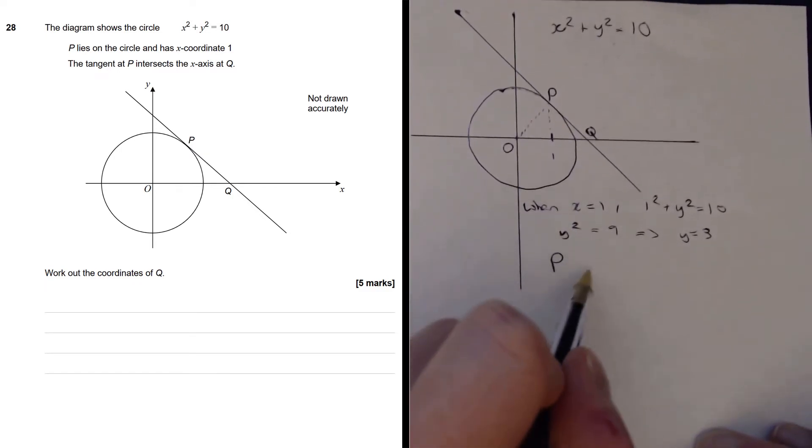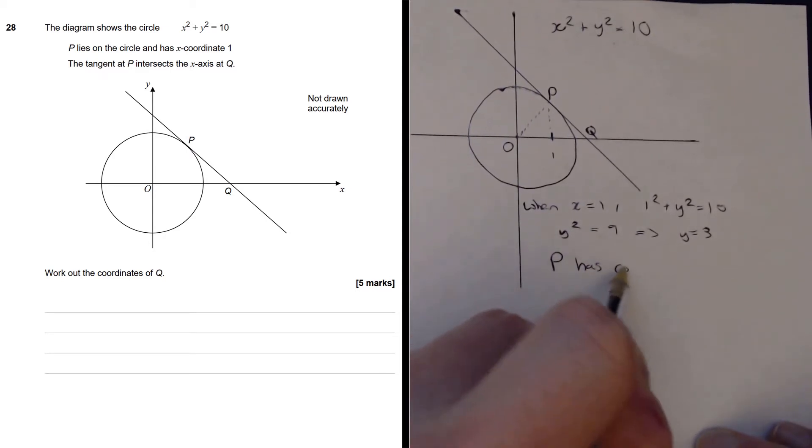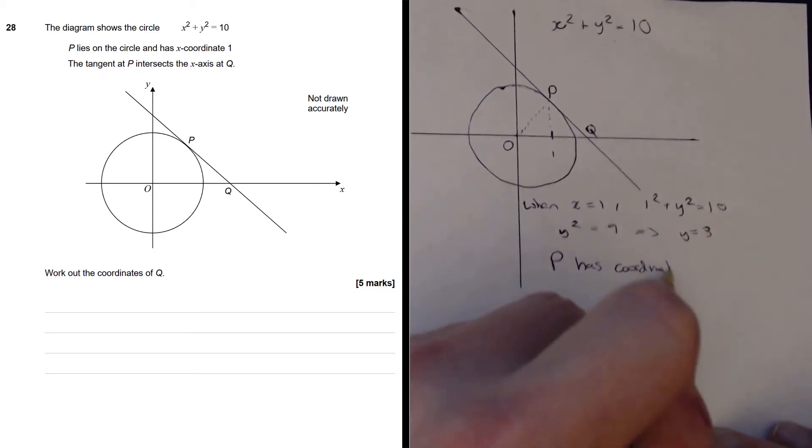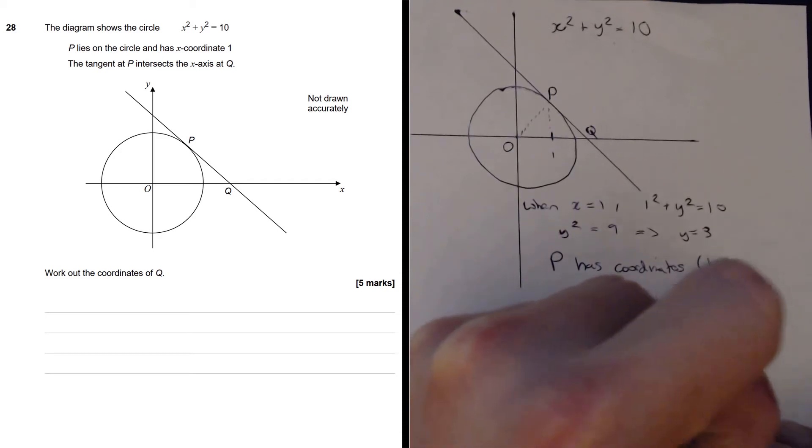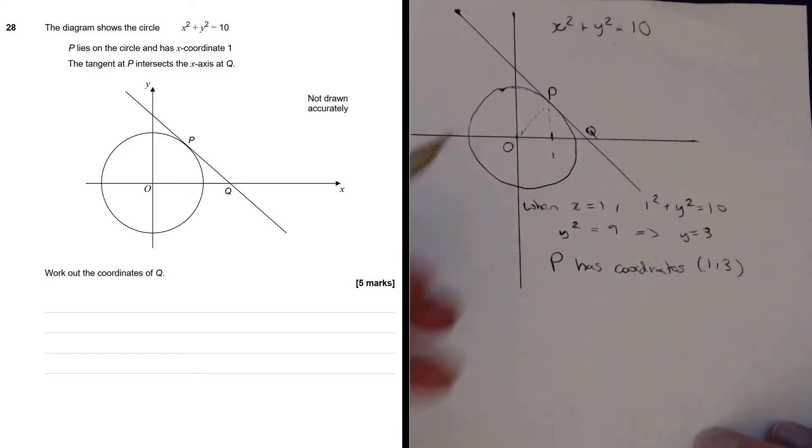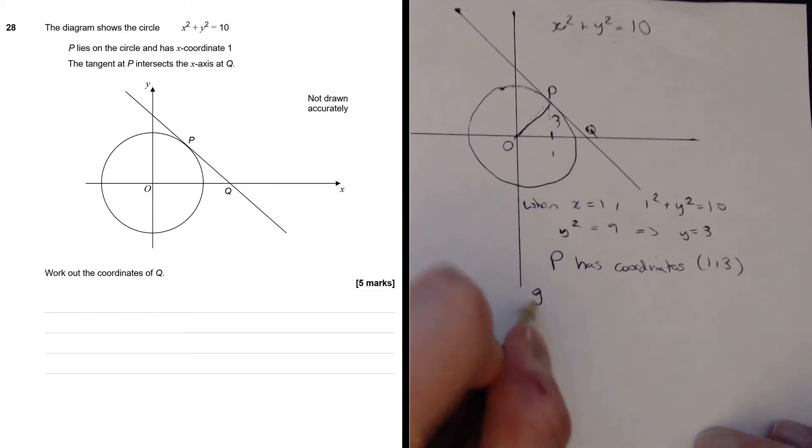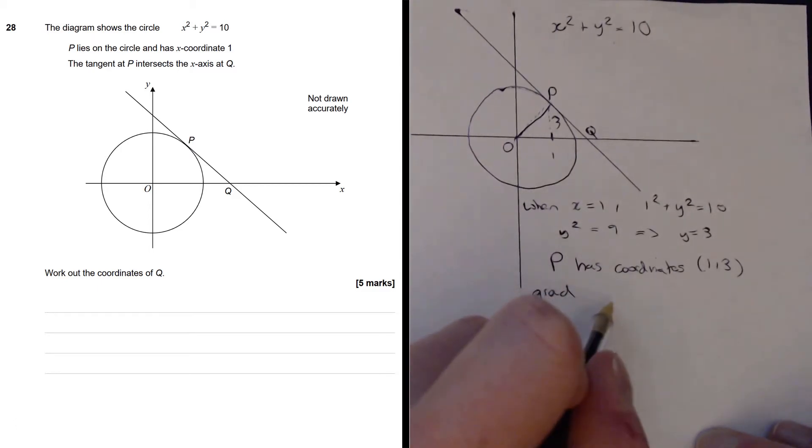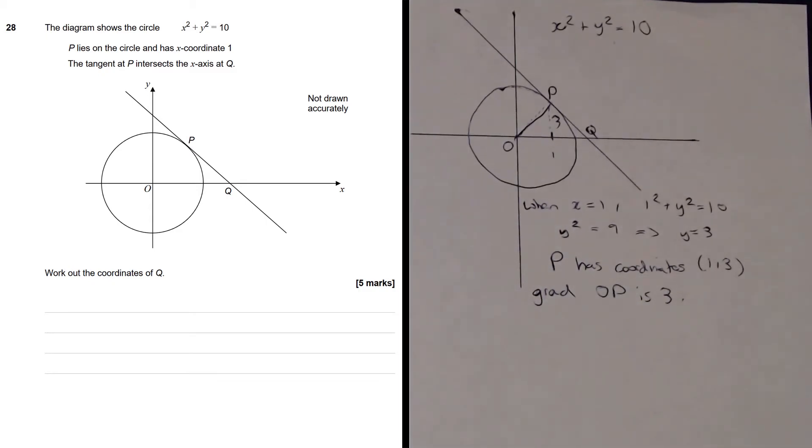So point P has coordinates 1, 3, now that's useful. What that tells us is the gradient of that line is 3, because it's the change in y over the change in x.